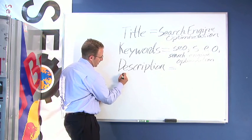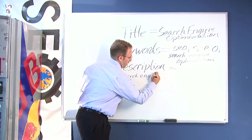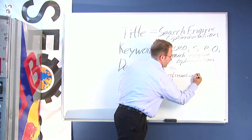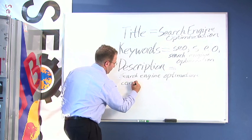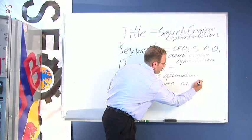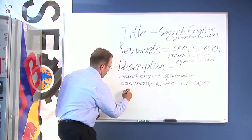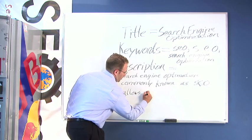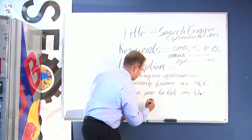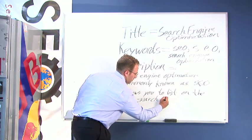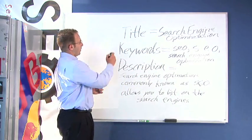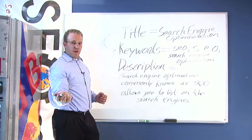So you'll want to write something that has keywords in it — for example: 'Search engine optimization, commonly known as SEO, allows you to list on the search engines.' What we did here with the description is we hit upon a few specific keywords so that we're not placing too many keywords in the meta tags. You can see the logical pattern going from your title into your keywords and then from your keywords into your description.